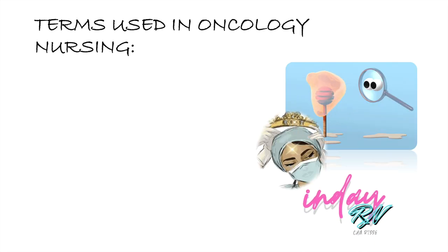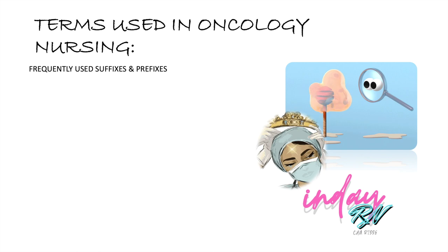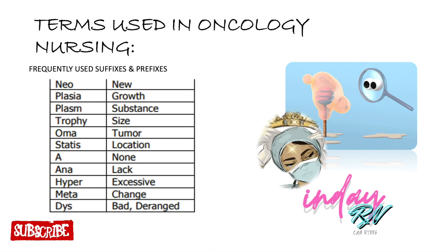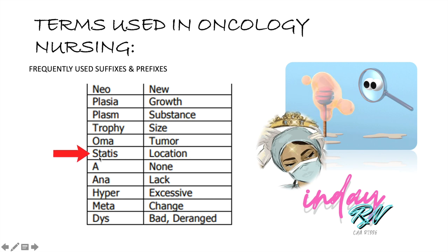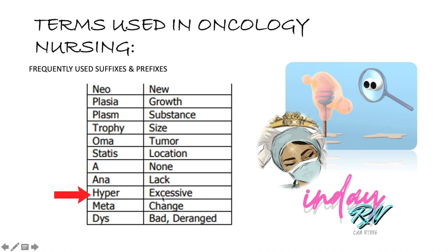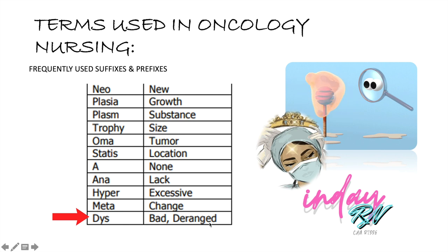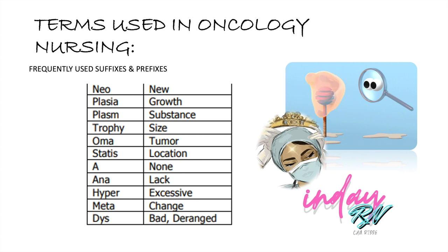In order to easily understand the further topic, let us first define the terms that are being used in oncology nursing. These are frequently used suffixes and prefixes. Neo means new. Plasia means growth. Plasm is a substance. Trophy means size. Oma means tumor. Stasis means location. A means absence or none. Ana means lack. Hyper means excessive or increase. Meta is change. And dys means bad, deranged, or irregular. These are the frequently used suffixes and prefixes in oncology nursing.